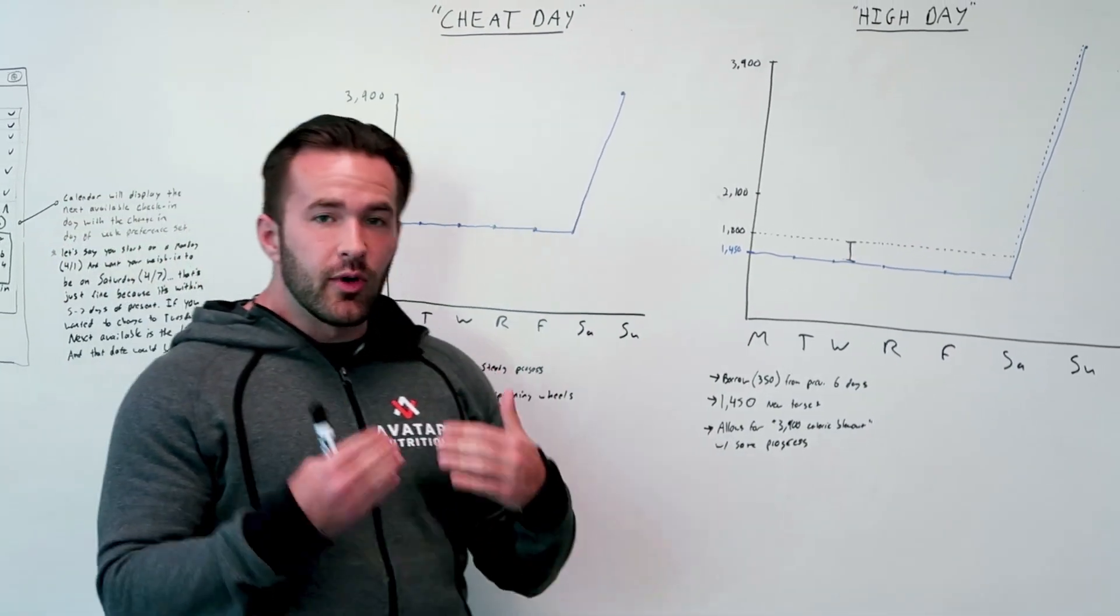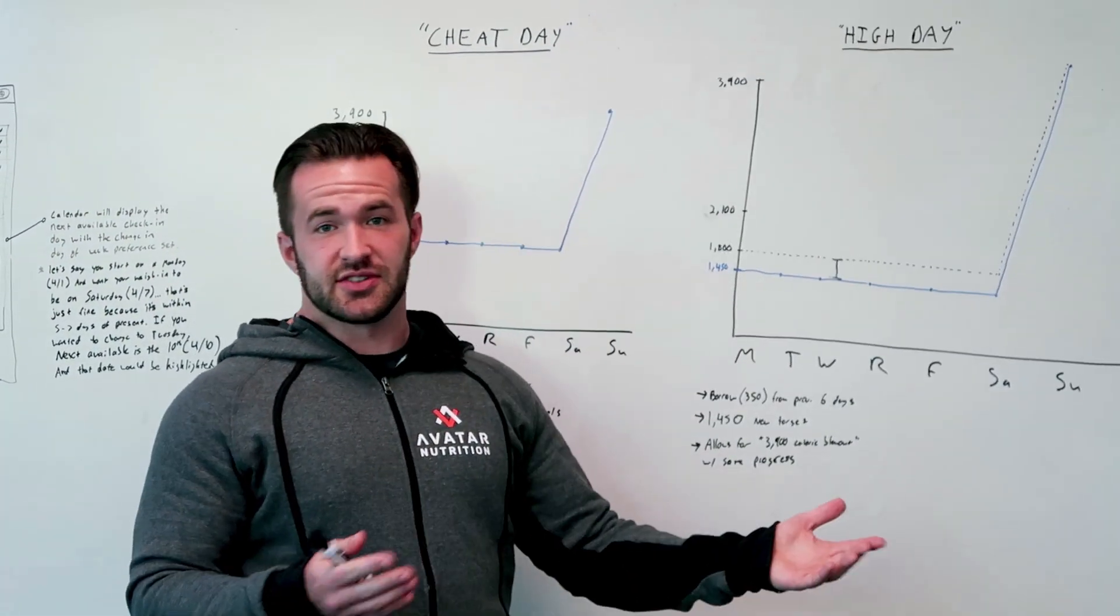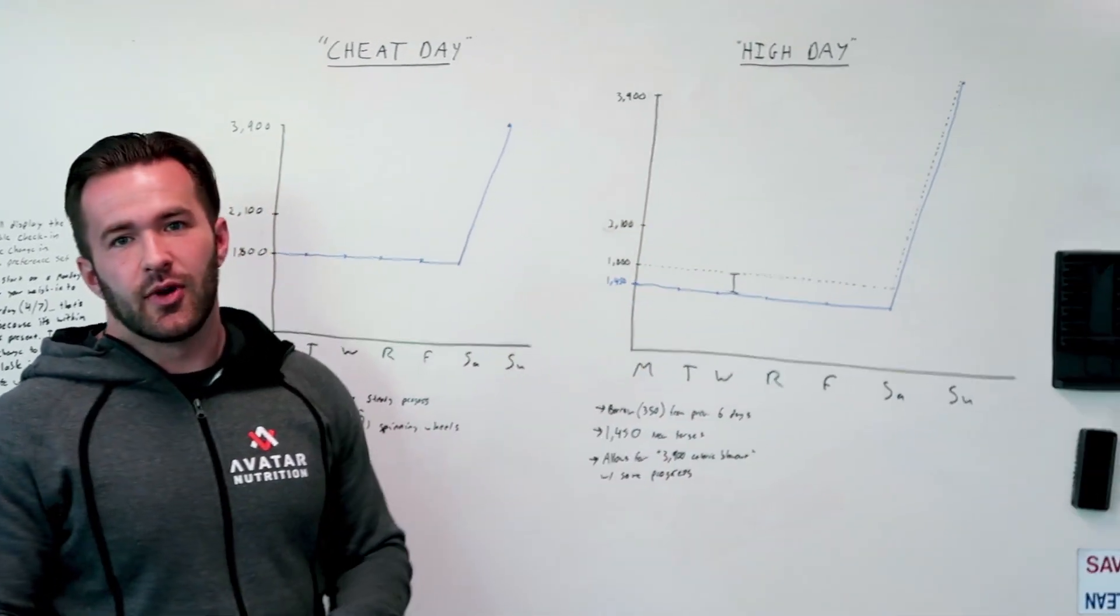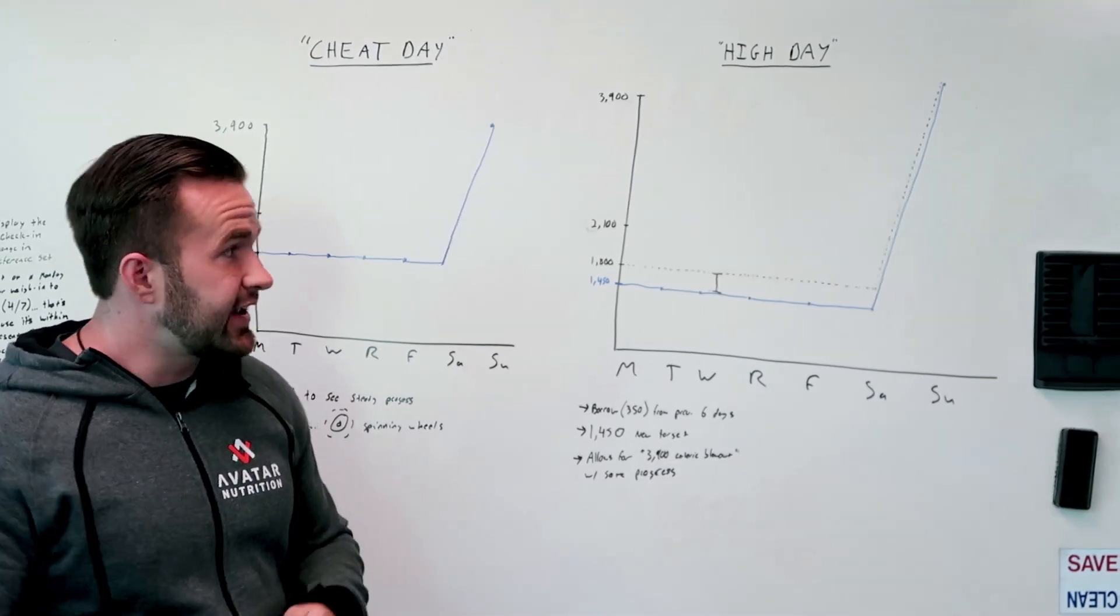So what can you do about it? Let's say that you want to have a day that's higher, but still see progress. That's why you're going to want to click into the logic of using a high day.